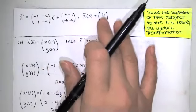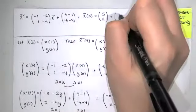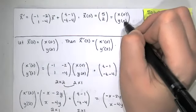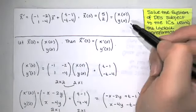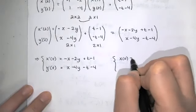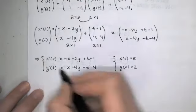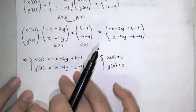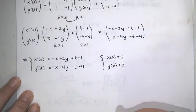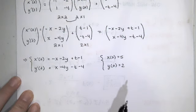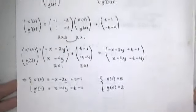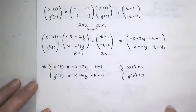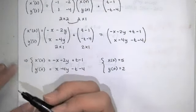Setting the two column vectors equal component by component, we get x'(t) = −x − 2y + t − 1, and y'(t) = x − 4y − t − 4. The initial condition x(0) = [5, 2] means x(0) = 5 and y(0) = 2. This is our system of differential equations with initial conditions, which we'll solve using the Laplace transformation method.